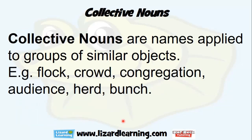Collective nouns are when we get a group of things together. For a group of birds, we call it a flock. People together — a crowd. People who are in church — a congregation. People at a concert — an audience. A group of cows — a herd. And flowers — you could put them into a bunch.